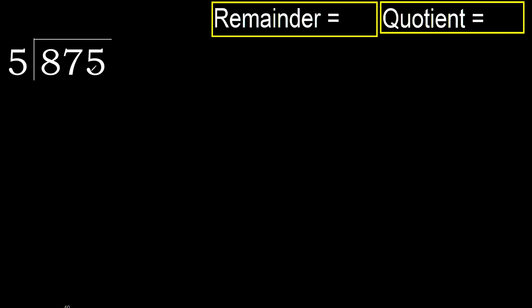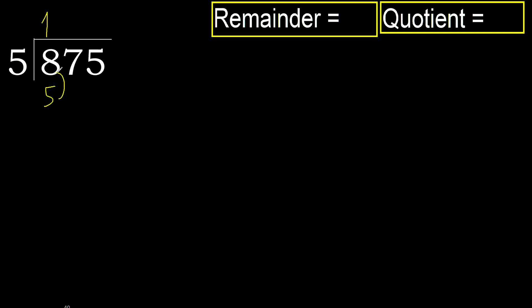875 divided by 5. 8 is not less, therefore work with 8. 5 multiplied by which number is nearest to 8 but not greater? 5 multiplied by 2 is 10 — 10 is greater. 5 multiplied by 1 is 5 — it is not greater. Ok. Subtract. Next: 37.